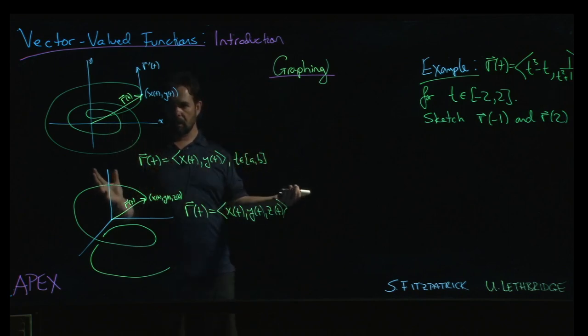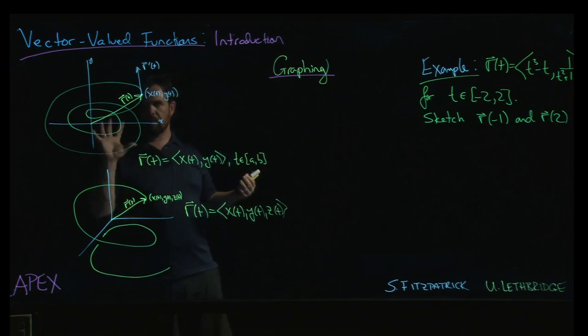How do we visualize a vector-valued function? The idea is we think in terms of these curves, these graphs.